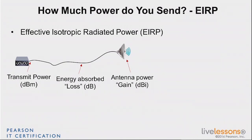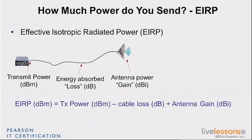EIRP stands for Effective Isotropic Radiated Power. We use 'isotropic' because we use the dBi scale, and because it compares the energy you focus in one direction — with a directional antenna — to what an isotropic antenna would radiate in all directions. So we ask: how much more are you sending in that direction because of your directional antenna? That's the EIRP. The equation is: transmit power out of the access point, minus cable loss, plus antenna gain. That's the EIRP.